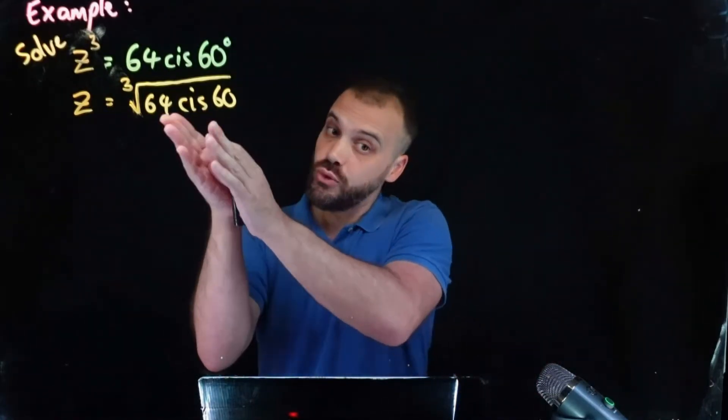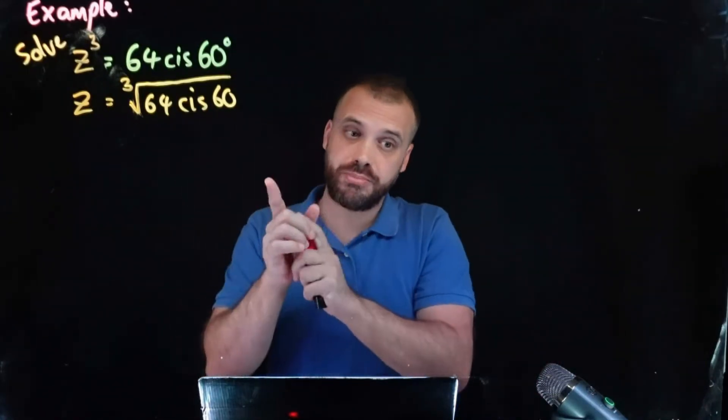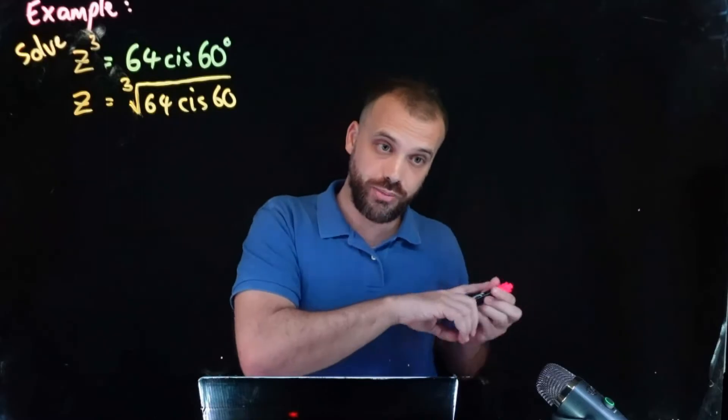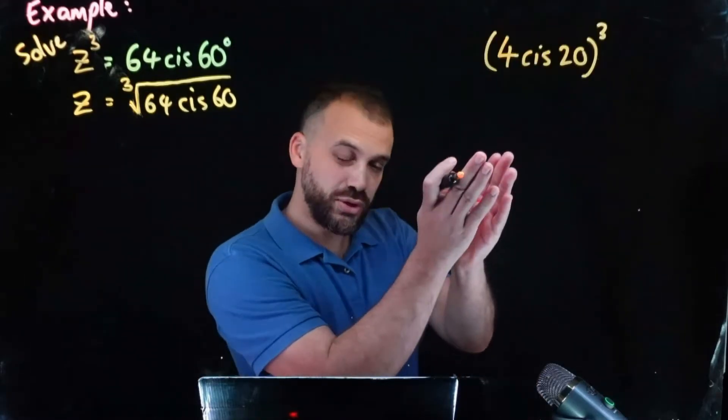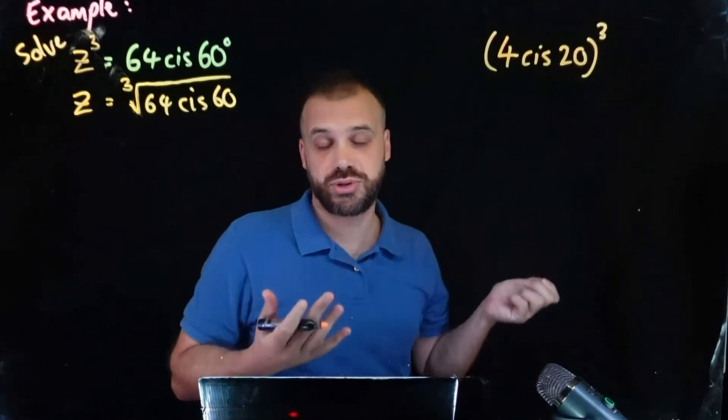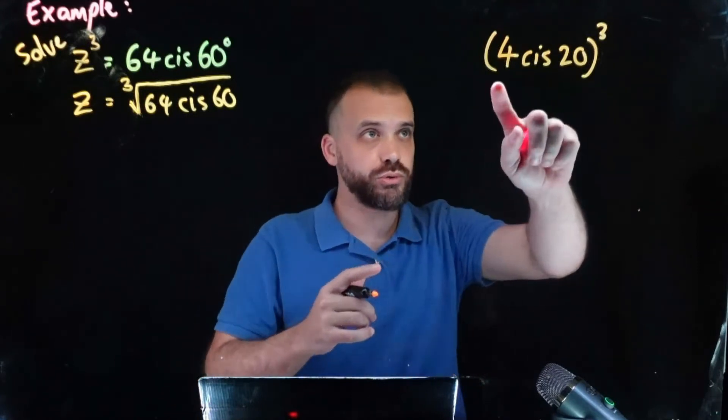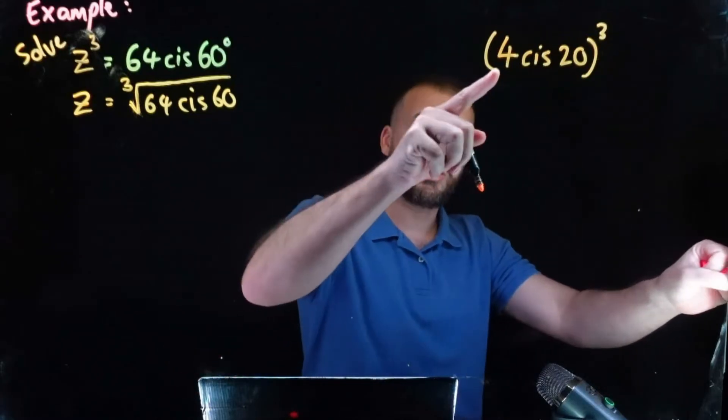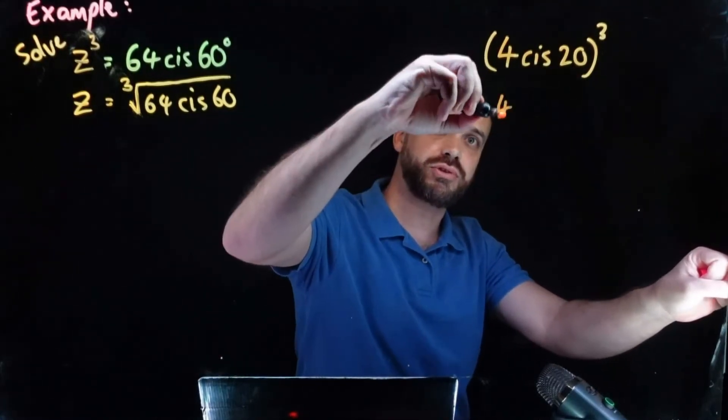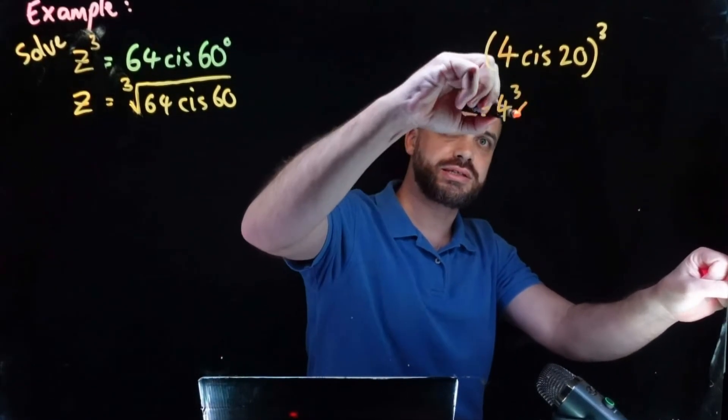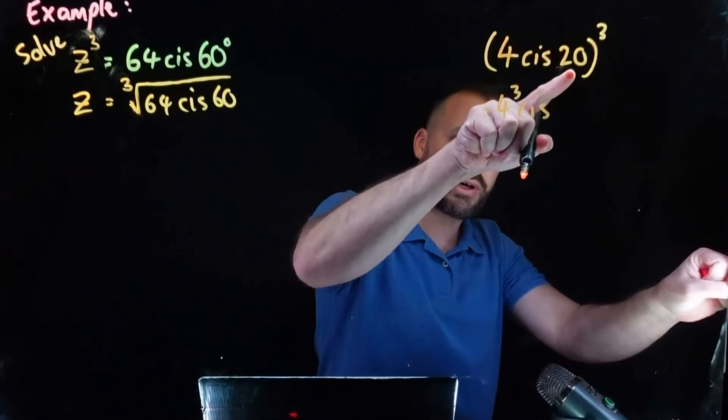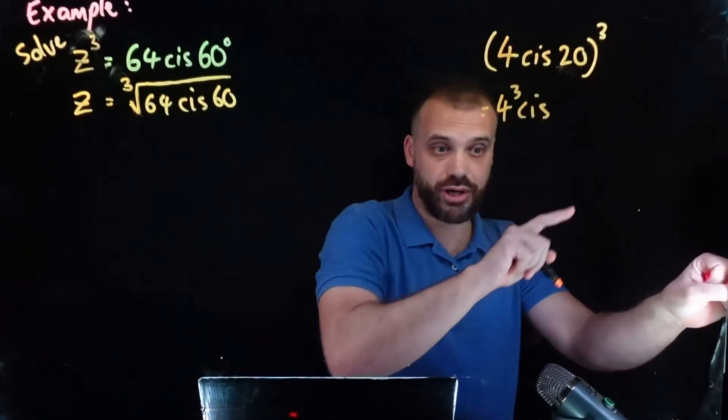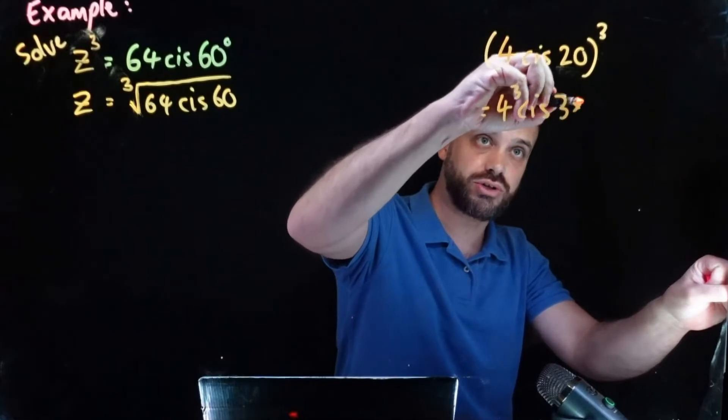All right, so before we get to there though, let's remember something we already know about complex numbers and that thing we already know is how to raise them to powers. If we want to raise a complex number to a power we do four to the power of three cis whatever the argument is times three so three times 20.